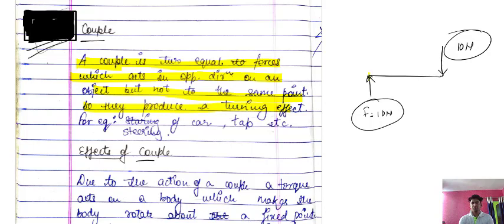So any object which has been applied with such forces — acting in opposite directions but of the same magnitude — is producing a turning effect. It will try to rotate the object. For example, the steering of a car.